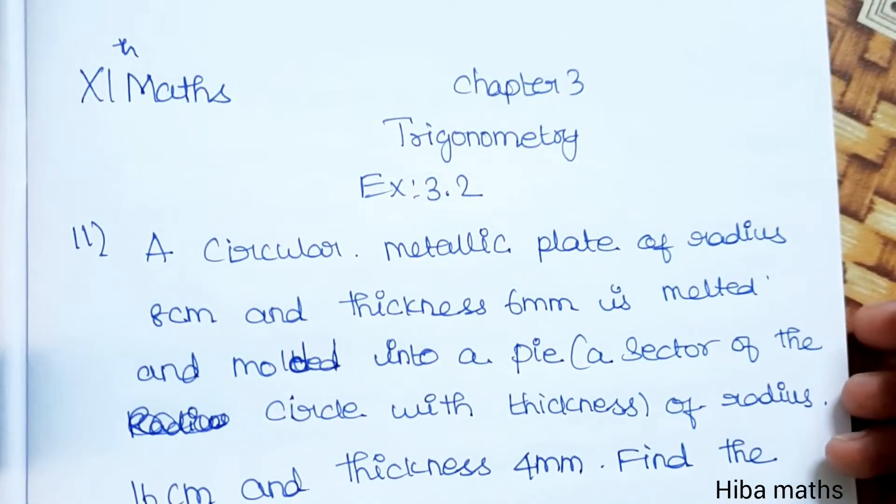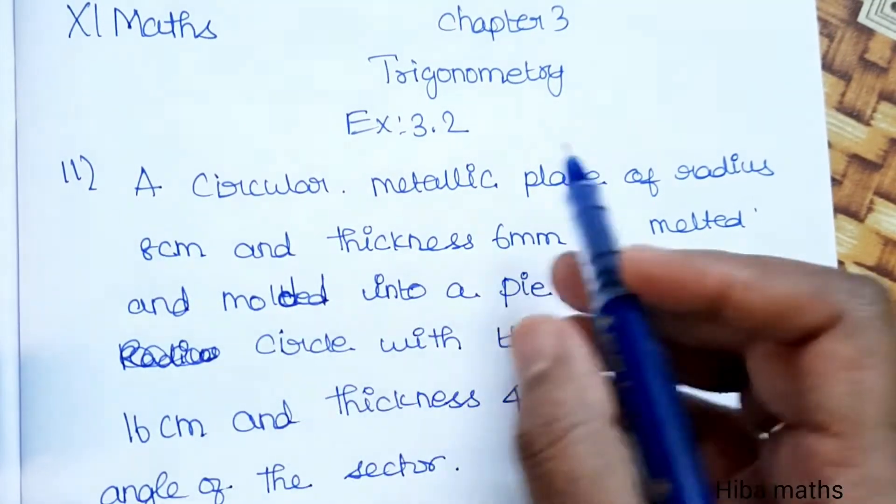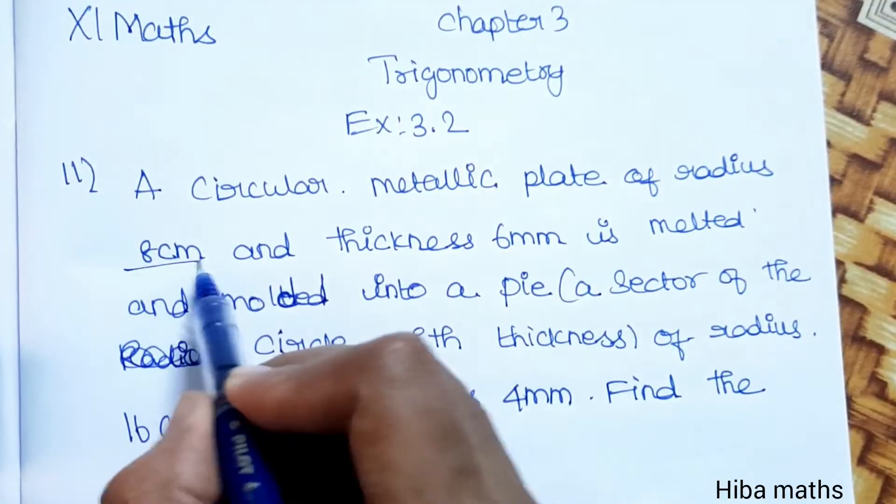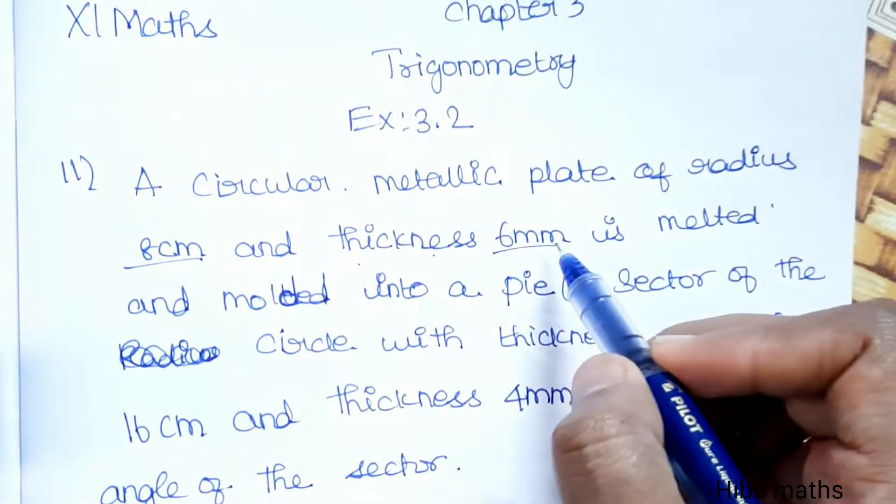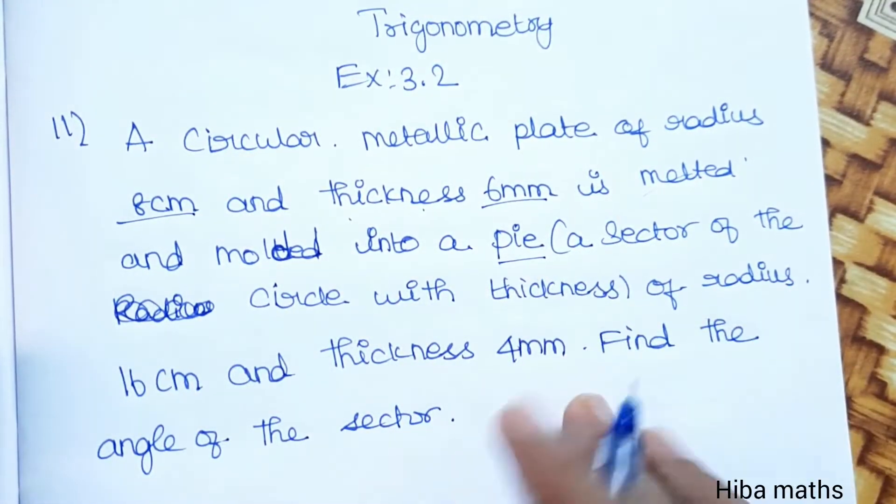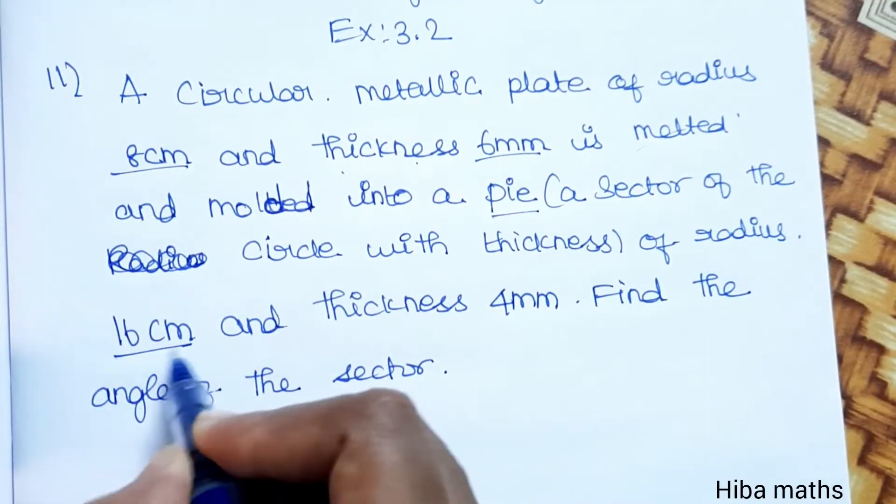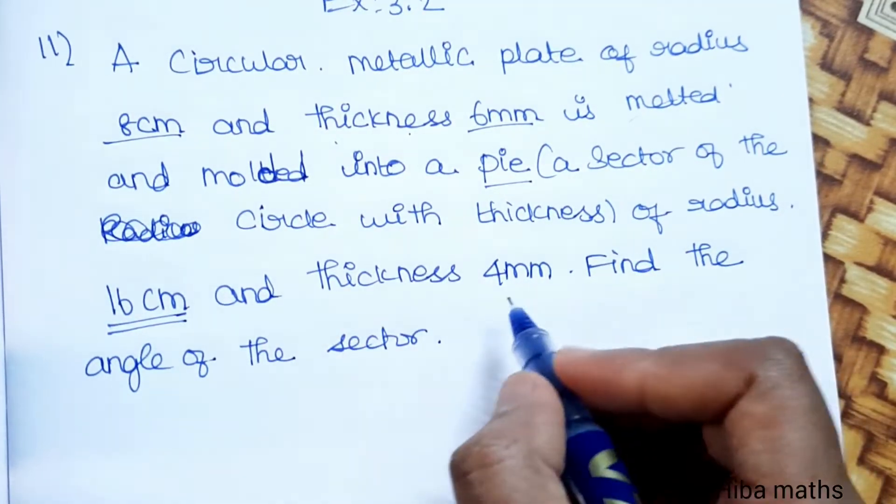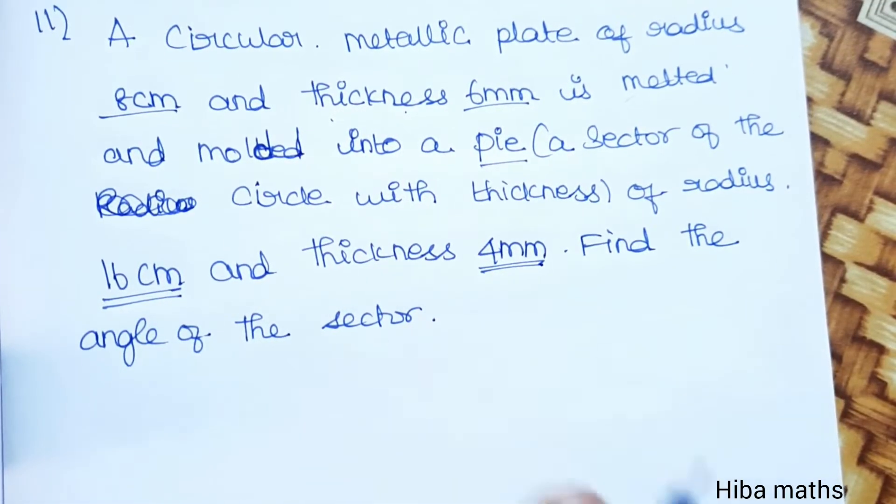Hello students, welcome to Hiba Maths, 11th Standard Maths, Chapter 3 Trigonometry, Exercise 3.2. A circular metallic plate of radius 8 cm and thickness 6 mm is melted and molded into a sector of a circle with radius 16 cm and thickness 4 mm. Find the angle of the sector.